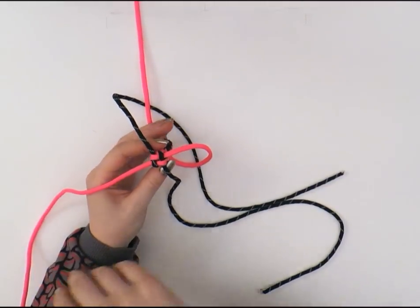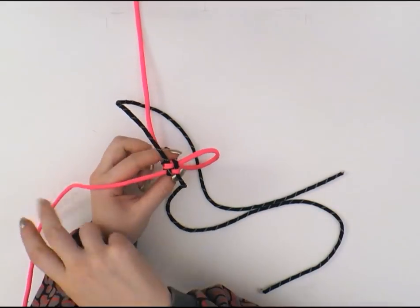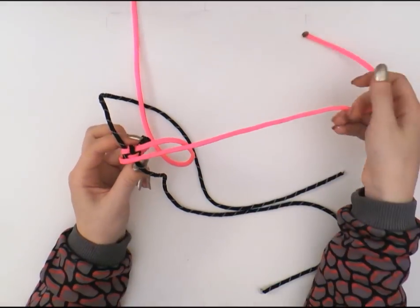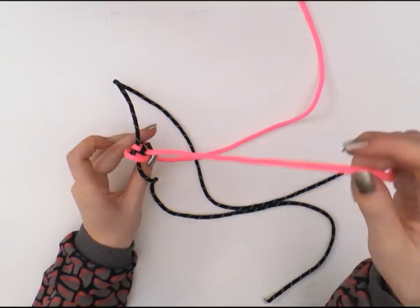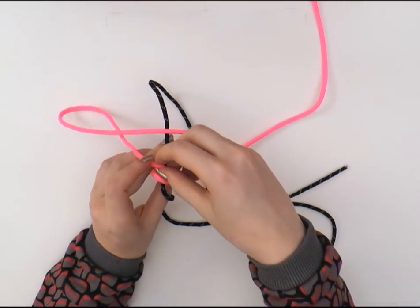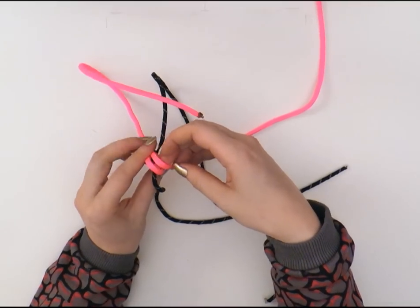So, if you remember the box stitch, it's the one where you keep everything parallel. So, instead of crossing over, you just make sure that the pinks go like that.